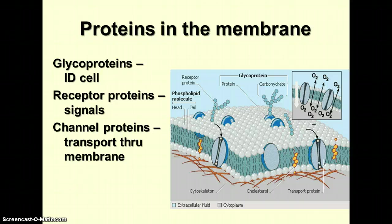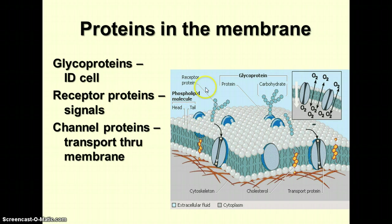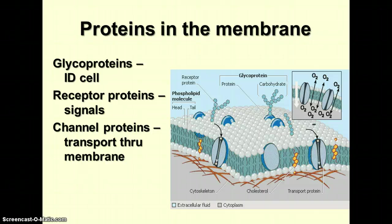Also in the cell membrane are proteins. There are various kinds, and we're going to focus on three of them. The glycoproteins have a carbohydrate chain attached to them and act like identification tags of the cell, identifying what type of cell it is. There are also receptor proteins for chemical signals that pass back and forth between cells. Finally, channel proteins — sometimes called carrier proteins — allow transport of various molecules through the membrane. Notice also the yellow structures representing cholesterol, which give stability to animal cell membranes but are not found in plant cell membranes, since plant cells have a cell wall for structure and support.